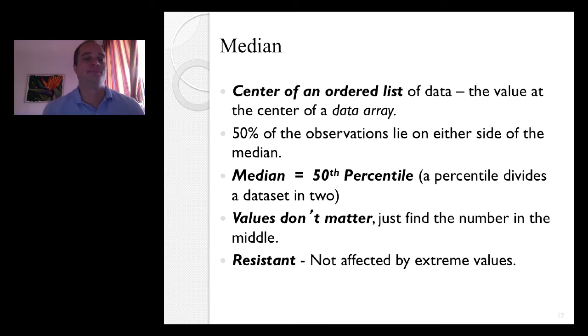The median is the center of an ordered list of data. So rank your data from smallest to largest, for example. And whatever the median is, 50% of the observations lie on either side. So it's the 50th percentile. Of course, a percentile divides a data set into two. The values don't matter. It doesn't matter what Billy Gates is earning or any unemployed person is earning. It's whatever happens in the middle.